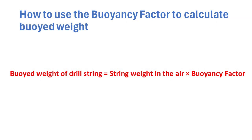To determine the weight of the drill string in drilling fluid, often called buoyed weight, we multiply the air weight of the drill string by the buoyancy factor. The buoyancy factor accounts for the weight reduction caused by the buoyant force of the drilling fluid.